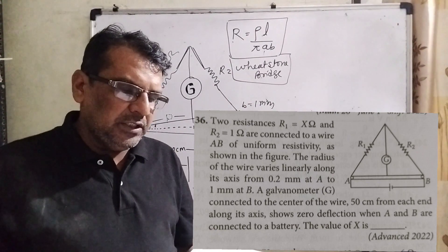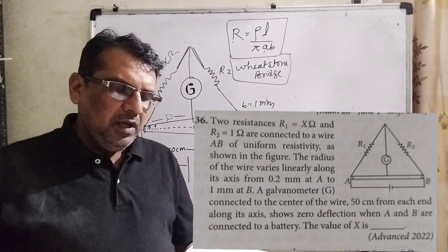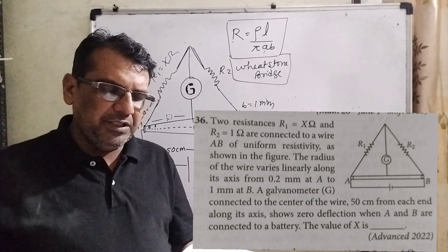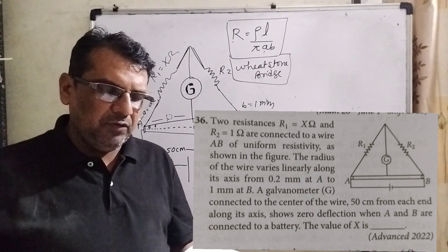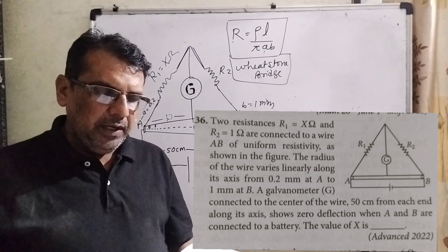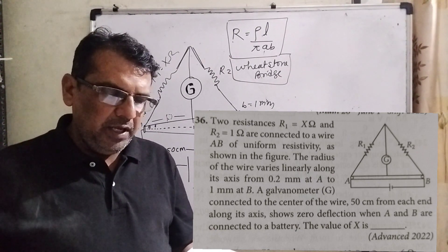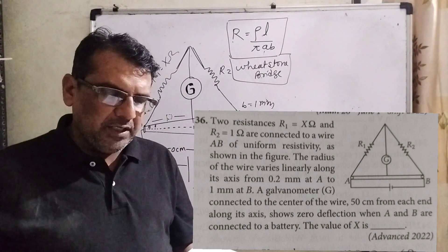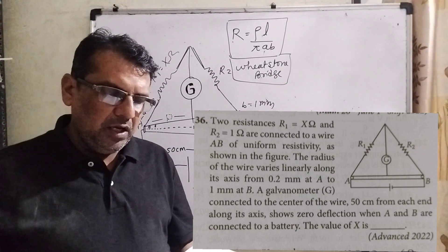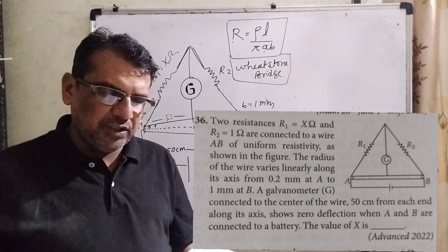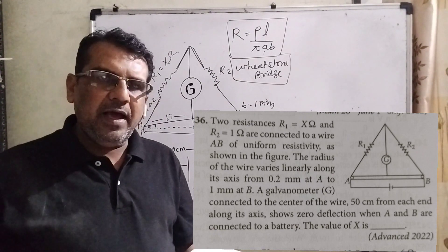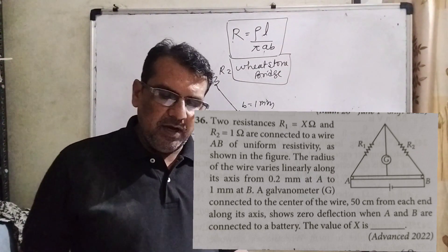The question is: two resistances R1 equal to X ohm and R2 equal to 1 ohm are connected to a wire AB of uniform resistivity as shown in the figure. The radius of the wire varies linearly along its axis from 0.2 mm at A to 1 mm at B. A galvanometer connected to the center of the wire, 50 centimeter from each end along its axis, shows zero deflection when A and B are connected to a battery. Then the value of X is? This question is asked in JEE Advanced 2022.